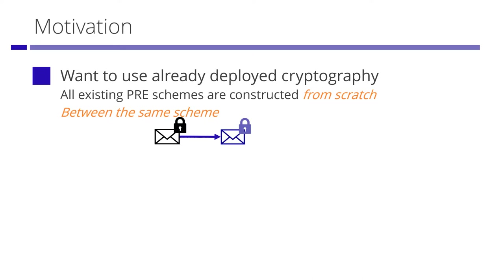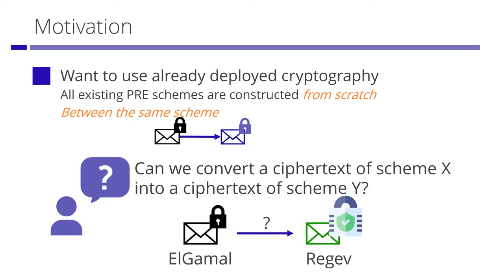We want to use existing PKE schemes as they are for achieving the proxy re-encryption mechanism. Moreover, existing PRE schemes cannot convert a ciphertext into a ciphertext of another scheme. Our question is: can we convert a ciphertext of some PKE scheme into a ciphertext of another PKE scheme? For example, an ElGamal ciphertext into a Regev ciphertext.